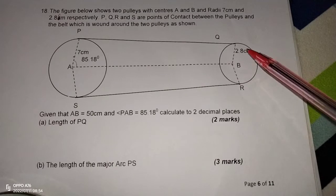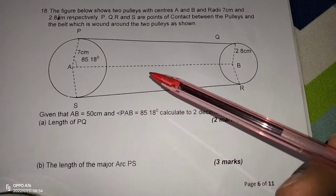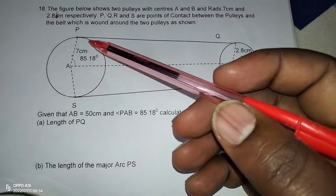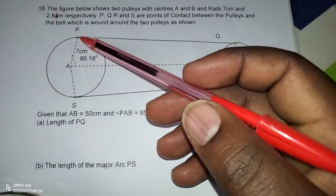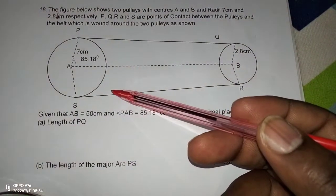So we have two pulleys and a belt which has been wound around the two pulley belts. Then we got the points of contact P, Q, R and S.